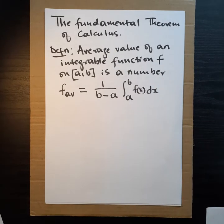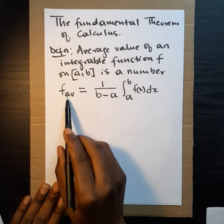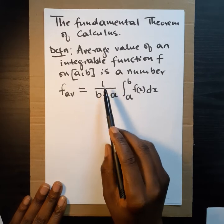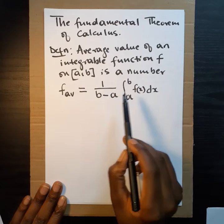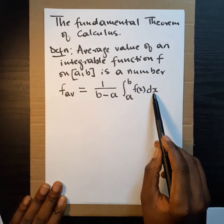So what is the average value of a function? The average value of an integrable function f on a closed interval [a, b] is the number we represent by f_av, which is equal to 1 over (b minus a) times the integral from a to b of f(x) dx.